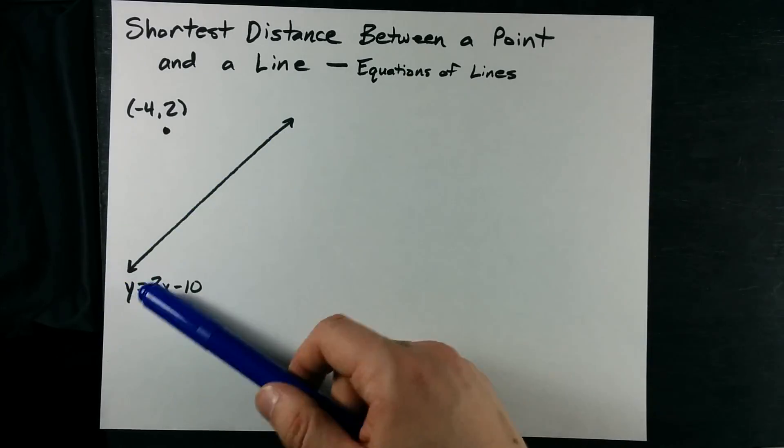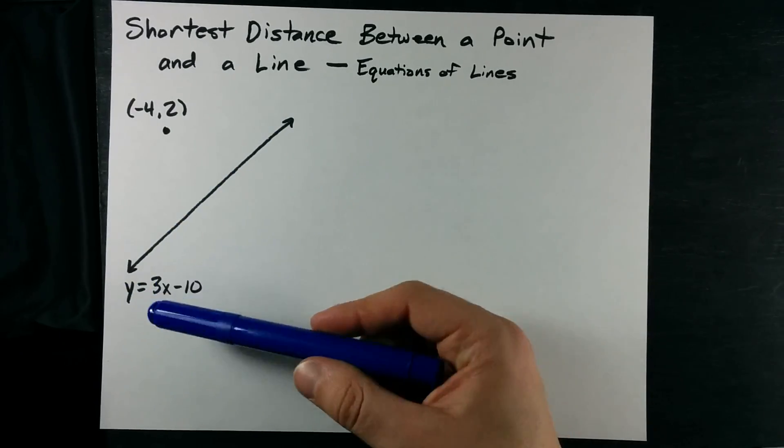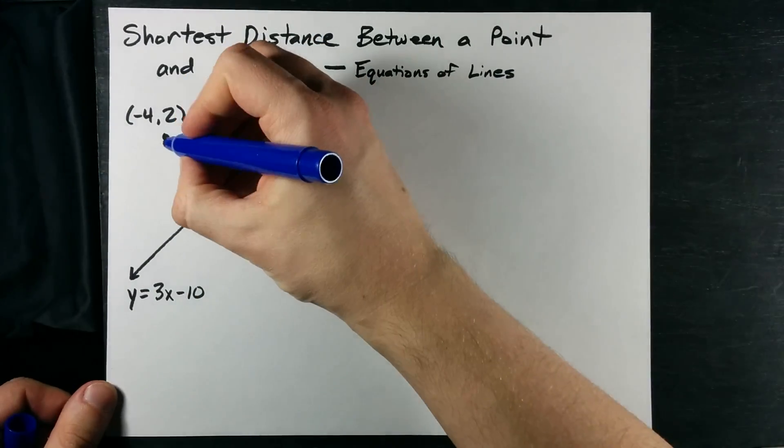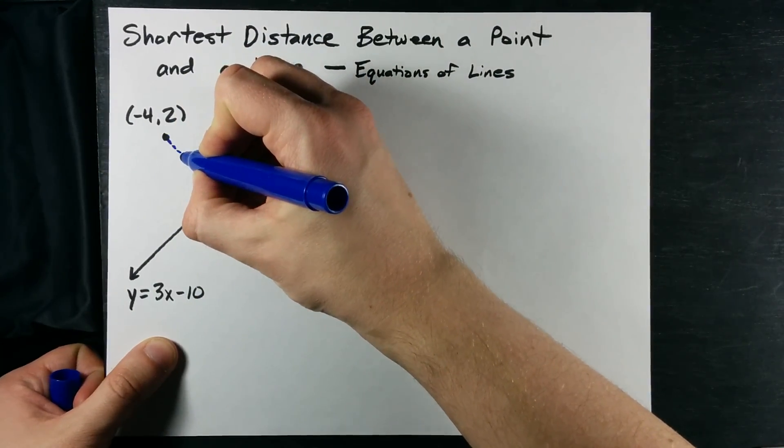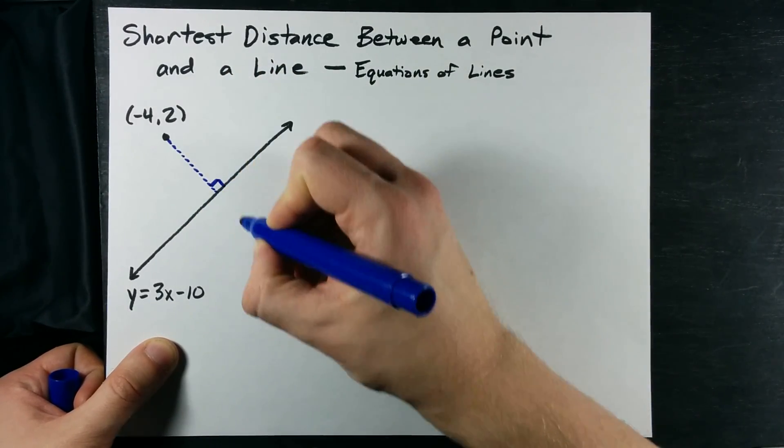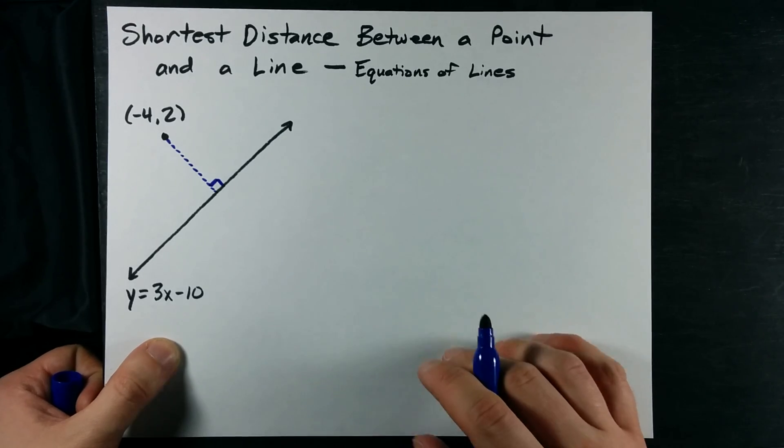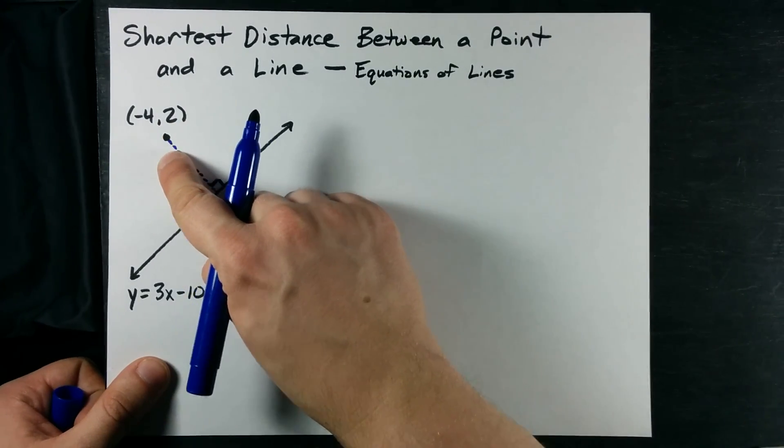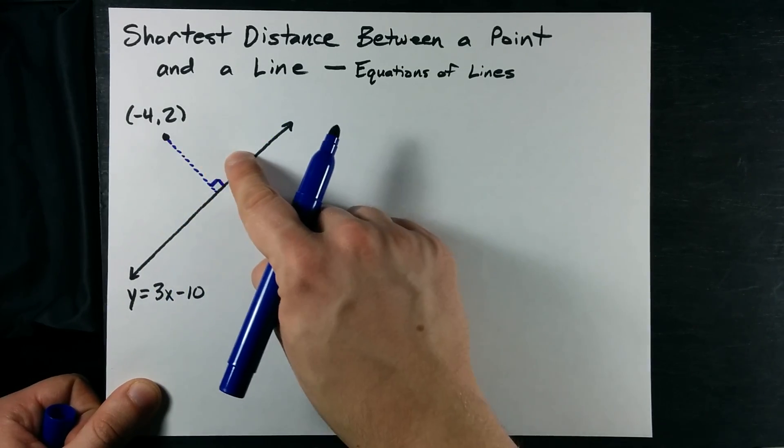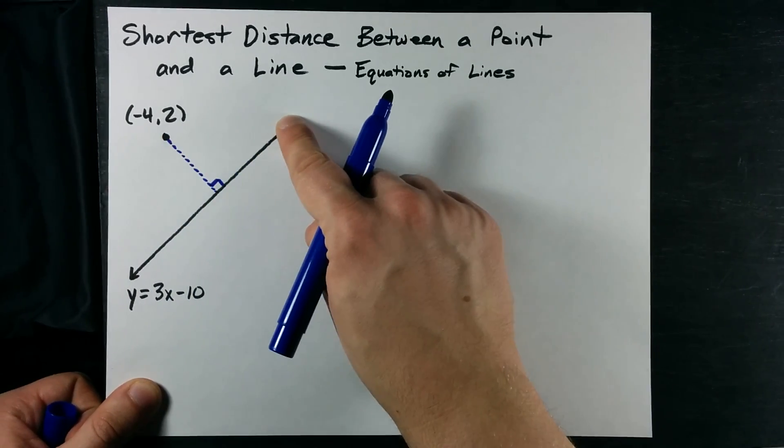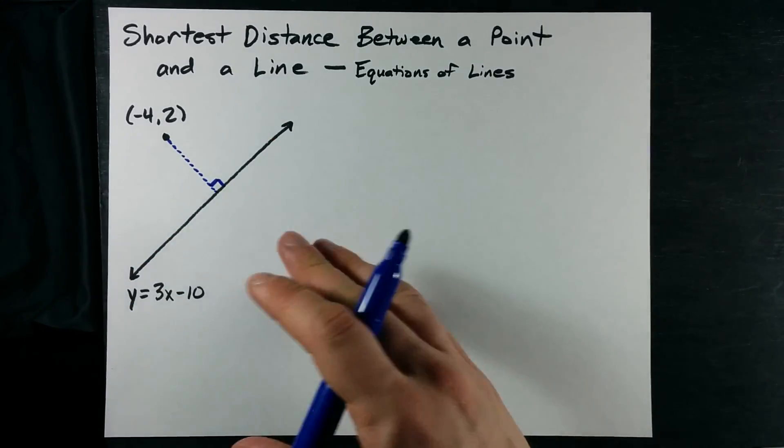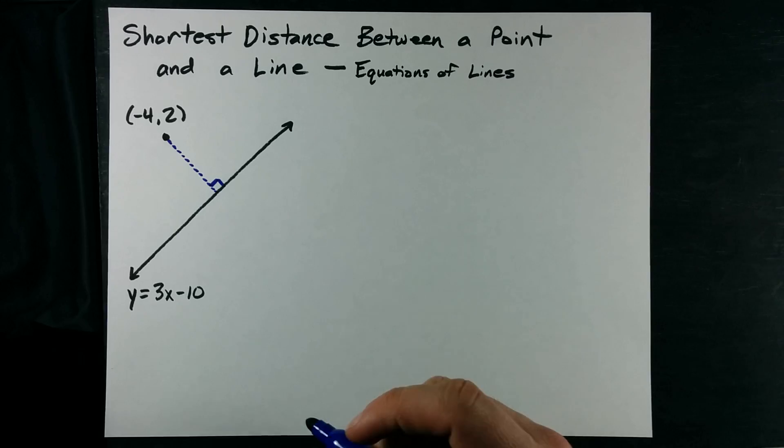If we want to know what the shortest distance between these two things is, the only thing you really have to know is that the shortest distance between the two is a line segment perpendicular to the line itself. Anything not perpendicular will be slightly longer, and Pythagorean theorem slash the fact that hypotenuses are always the longest side of a right-angled triangle imply that. Or you can just trust me.